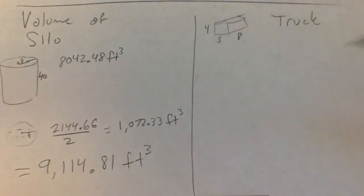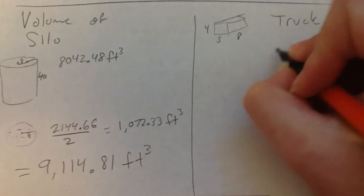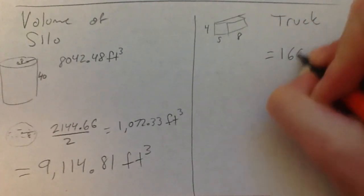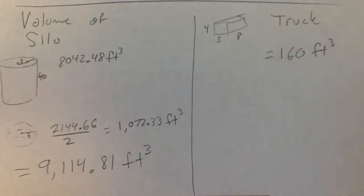And we could go back to Google and put all those things in, but honestly we're just doing 4 times 5 times 8. You could use Google if you want to for that, but it's that simple. So 4 times 5 times 8 is 160 feet cubed.